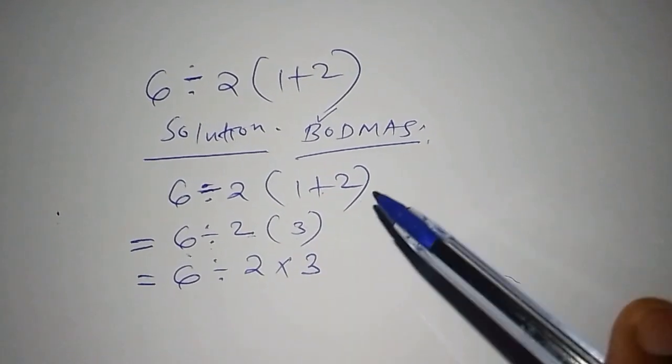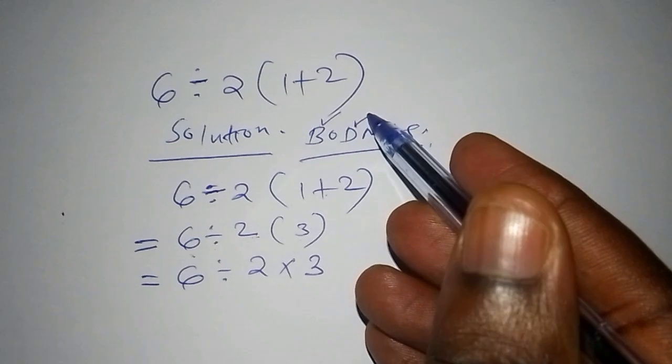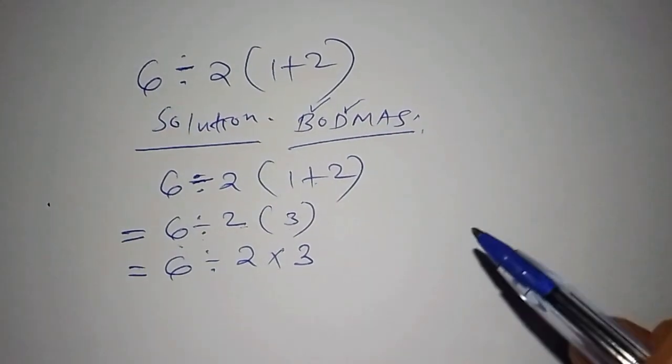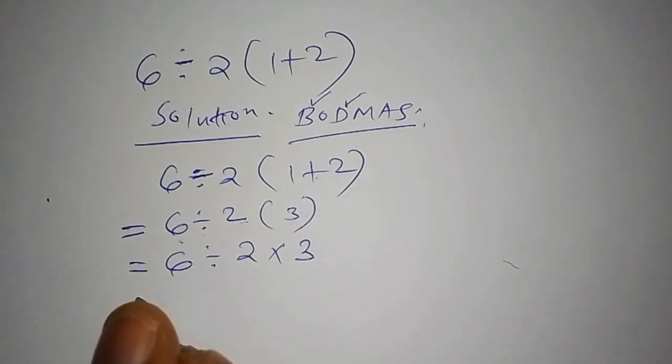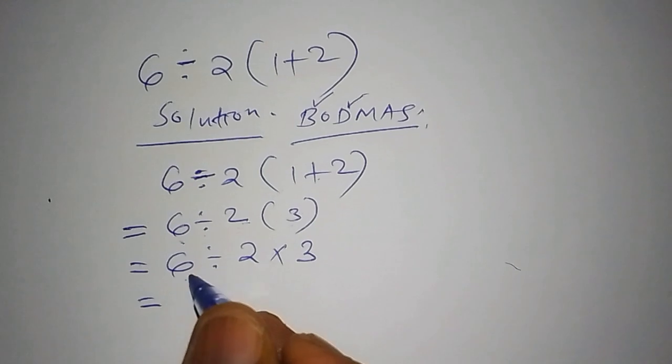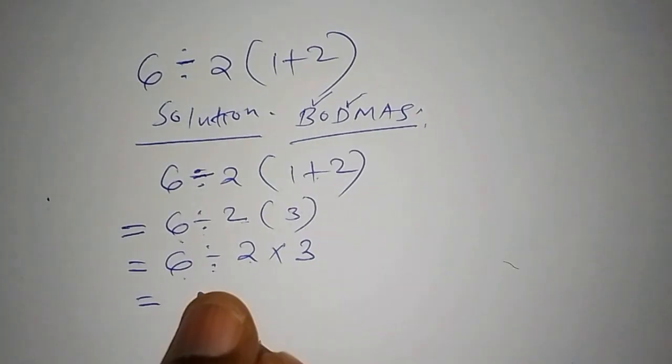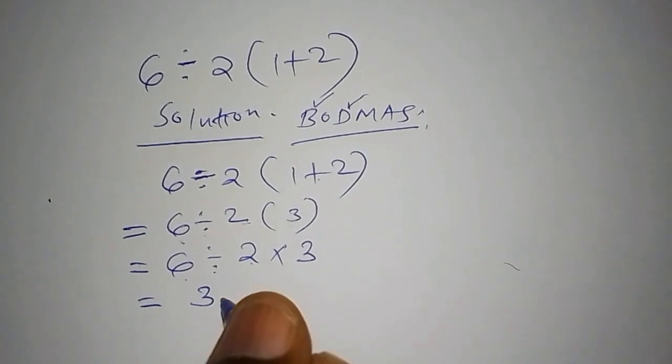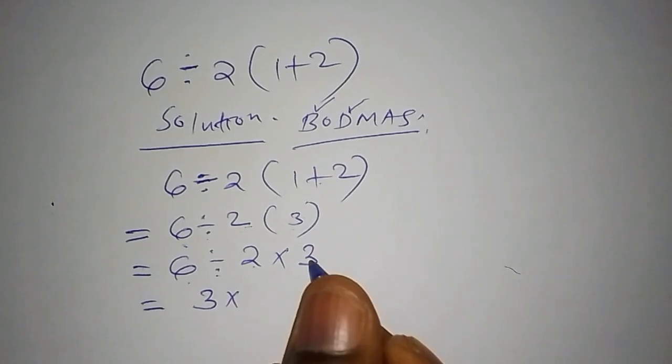So now we no longer have the bracket, then now we move to D, that is the division sign. Under the division sign, we shall have 6 divided by 2, and 6 divided by 2 is 3. Then you shall have 3 multiplied by this 3 here.